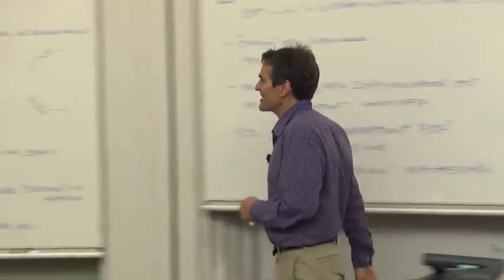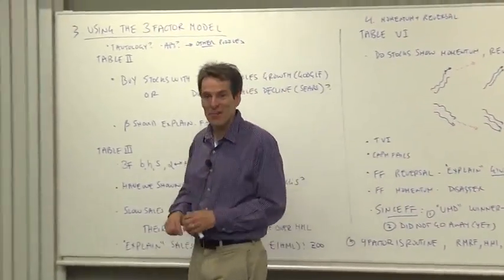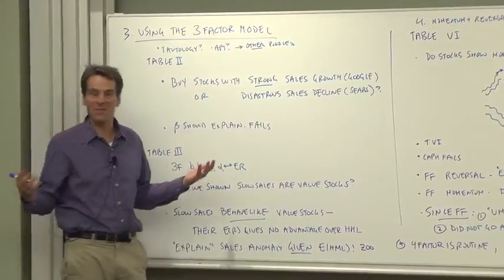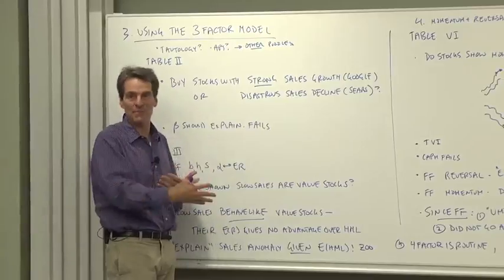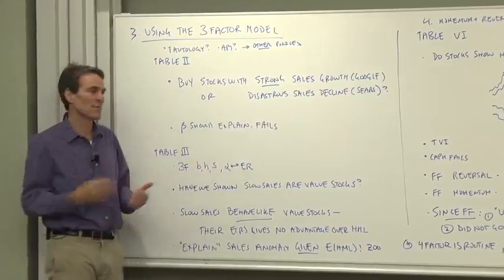This is a classic case of what we in a business school call the good stock versus good company fallacy. Of course, everybody knows that Google's a great stock. The price has already been bid up, and therefore you can't buy and make a great stock return going forward. You have to bear risk if you want to make money.